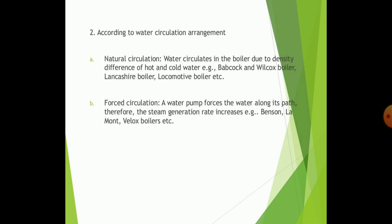We can achieve steam generation with many other methods as well. If there is an arrangement of water circulation, boilers can be classified according to the circulation of water — that is, natural circulation and forced circulation. If water circulates due to the density difference of hot and cold water, for example in Babcock and Wilcox boiler, it is called natural circulation. If a water pump or external force is required to move the water along the path, such boilers are said to have forced circulation, as seen in Benson and Lamont boilers.